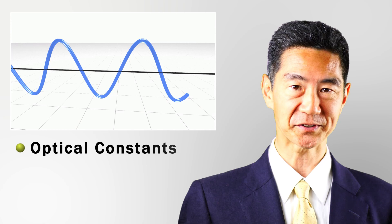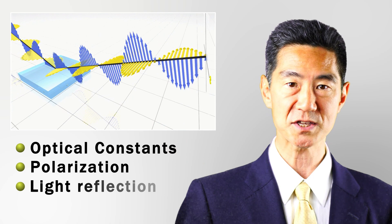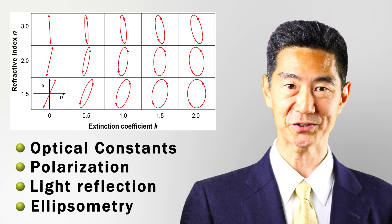Ladies and gentlemen, it is our pleasure to present this video which explains what is ellipsometry and how it works. First, I will explain optical constants, which are the quantities ellipsometry characterizes. For easy understanding of ellipsometry, I will show you polarization of light as well as light refraction based on three-dimensional animations. Finally, I will explain the basic principle of ellipsometry.